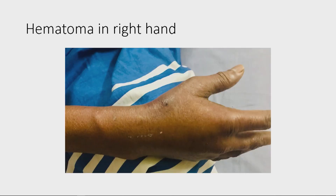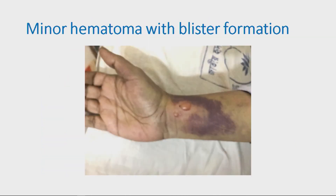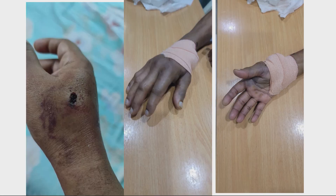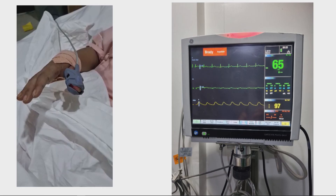Forearm hematoma, different types of hematoma — hematoma in the infraclavicular region, blister and hematoma, a small hematoma, and compartmental syndrome. Management of hematoma: apply a pressure cuff at the site of induration, inflate for 15 minutes at 15 mmHg below systolic blood pressure — same as for perforation. Check for compartmental syndrome — this is very important. Plethysmography by pulse oximeter probe is very important.